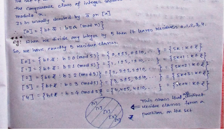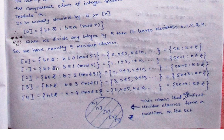Continuing this way, the last class with remainder 4 will be 5K plus 4. After remainder 4, there are no more distinct classes — a class for 5 would just merge with the 0 class since dividing 5 by 5 gives remainder 0. Similarly, the class for 6 would merge with the class 1. So dividing by 5 gives exactly 5 residue classes.